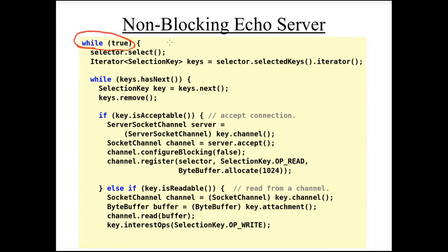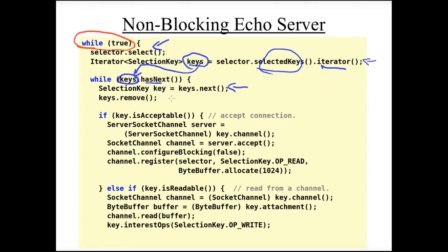This is the run loop of the thread handling communication. First, call select — a blocking operation that will not return until at least one of the operations we are interested in can be performed without blocking. When select returns, we retrieve the set of keys representing channels that can perform an operation immediately, and get an iterator over those keys. We iterate while there are more keys, retrieve the next key, and remove it from the set — otherwise it would remain and be handled again.